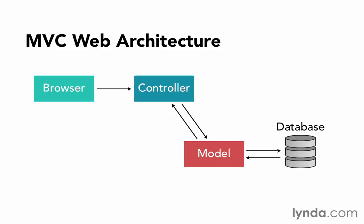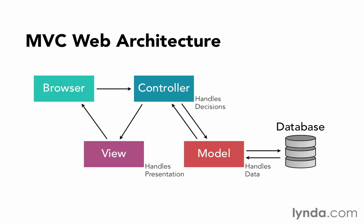Finally, when the controller is ready to return a result to the browser, it will send its results to the view — the presentation layer — which contains the code related to what HTML, CSS, and JavaScript should be returned back to the browser. Essentially, we've just taken that one single web page and broken it up based on its function into the controller, the model, and the view. The controller handles decisions, the model handles the data, and the view handles presentation.